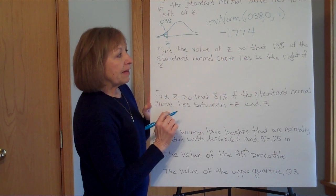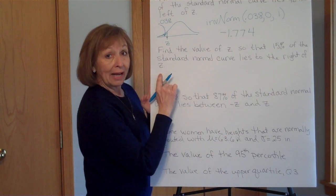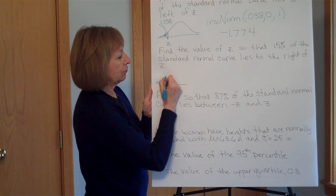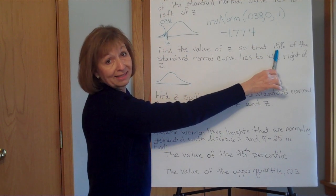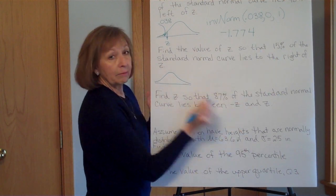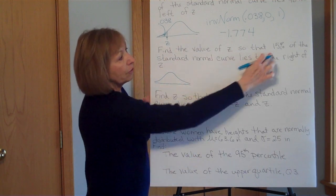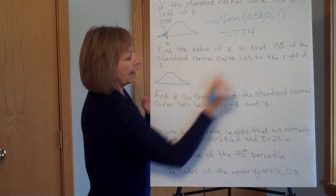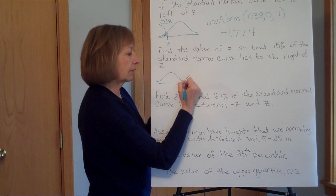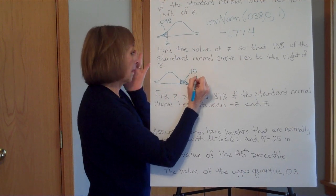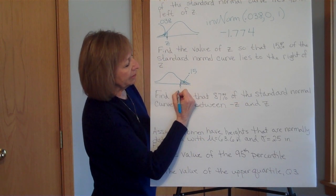What if they want me to find the value of z so that 15% of the standard normal curve lies to the right of z? So when I draw my standard normal curve, 15% is still not a huge amount. Remember, right in the middle, it's 50% to the right, 50% to the left. So 15% to the right. I'm going to have to be further over to the right. And so I have the area, and I want to find the z-score.